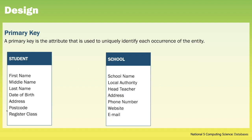Each entity requires a primary key. A primary key is the attribute that is used to uniquely identify each occurrence of an entity. So if we think about each student within our student table, how do we uniquely identify that student? We give them a student ID. And if we have a school table, how do we uniquely identify a school? We give them a school reference.